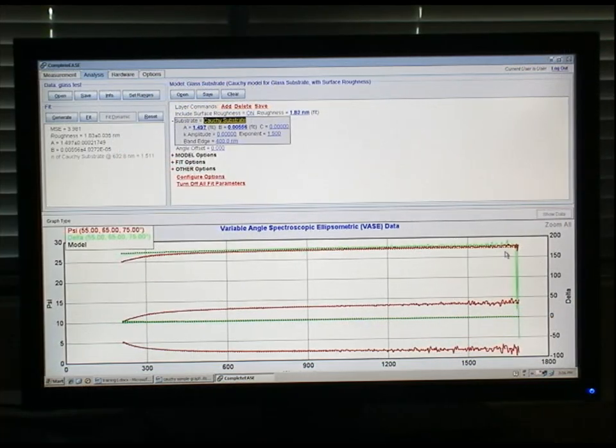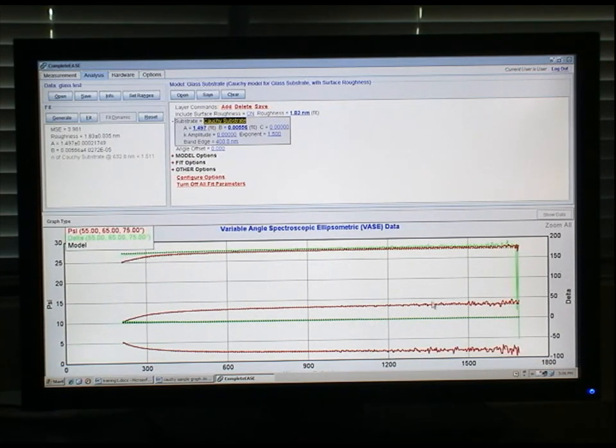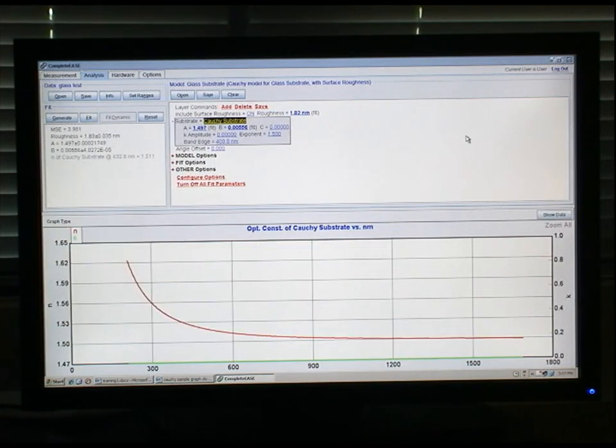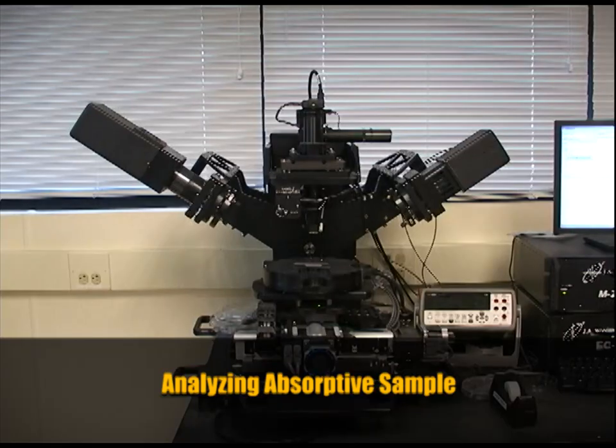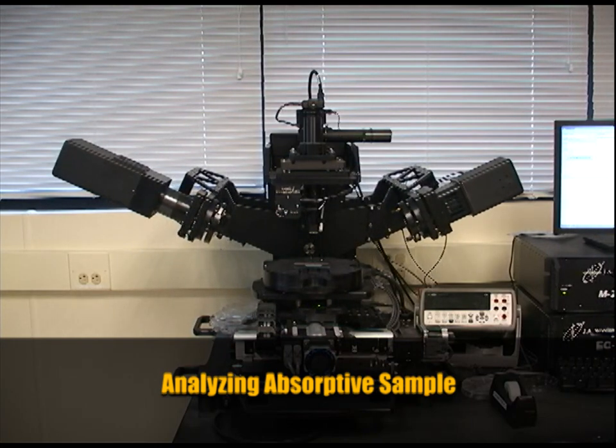The more noisy signal here, it's important to note, is not indicative of the material that was measured, but rather of the instrument that's being used. When we're looking at the data that we do intend on measuring, we have our optical constants. You can see that in the IR region, that noise does not translate to our generated model. Now we'll repeat our measurements with a strongly absorbing sample.